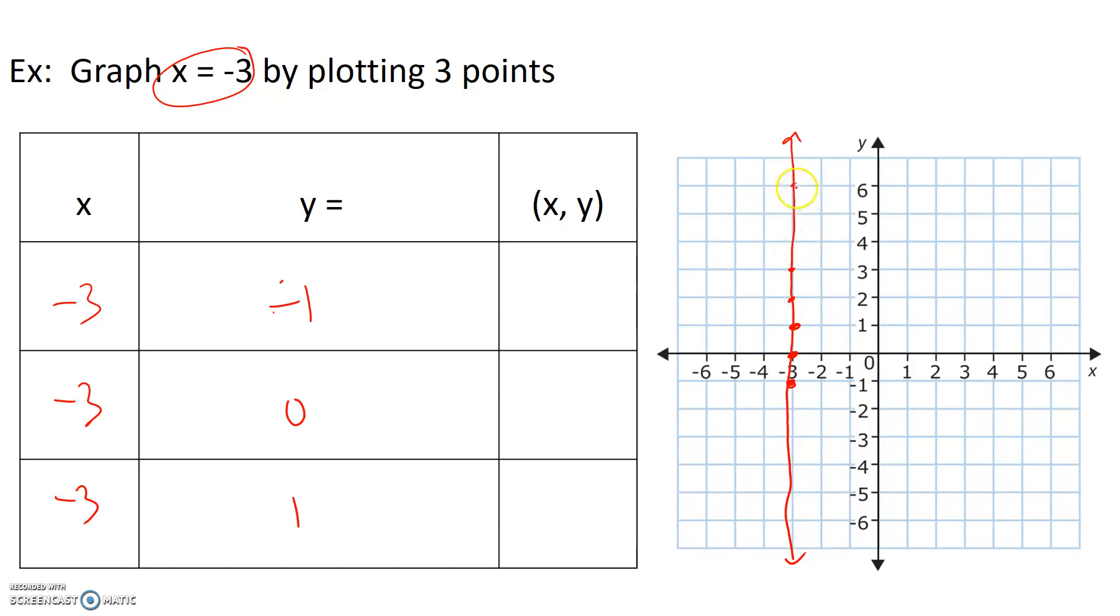So no matter what point you pick, like let's say we pick this point, it has an x coordinate of negative 3. Let's say we pick this point. This is the point negative 3, negative 5. The y value will change, but the x value will always be constant at negative 3.